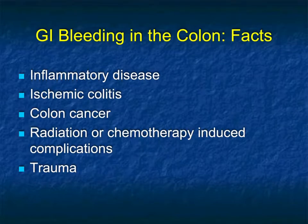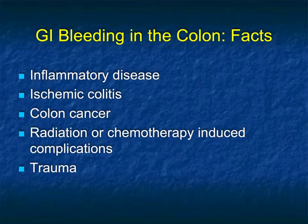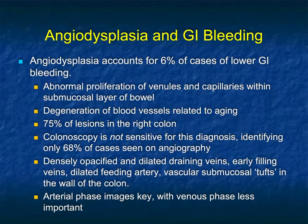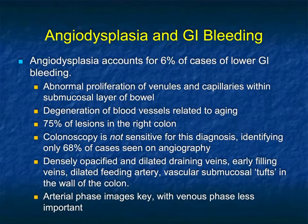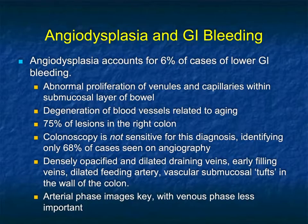The last thing I'll comment on is GI bleeding. We can talk about GI bleeding in the small bowel or large bowel due to inflammatory bowel disease, ischemic colitis, underlying malignancies, chemotherapy or radiation-induced complications, or trauma. We also talk about angiodysplasia — it's the abnormal proliferation of venules and capillaries within the submucosal layer of the bowel. It's more common in older patients, most common in the right colon, but can be seen in the small bowel as well. You see densely opacified or dilated draining veins, early filling of veins, dilated feeding artery, and vascular submucosal tufts in the wall of the bowel.